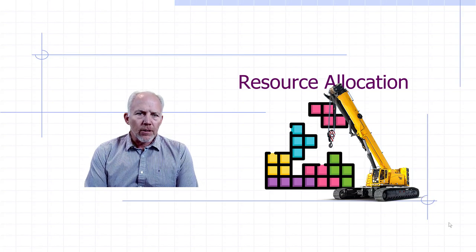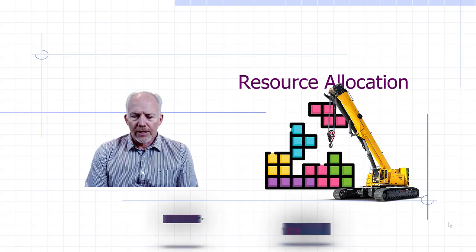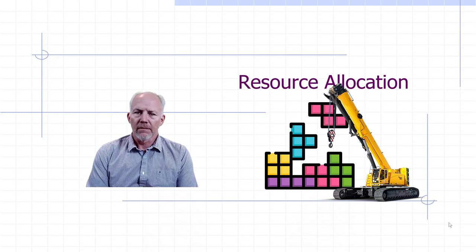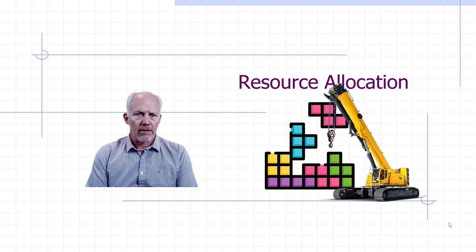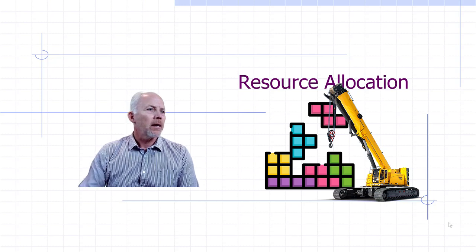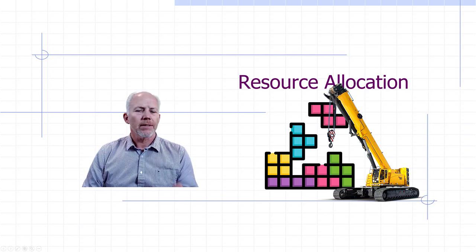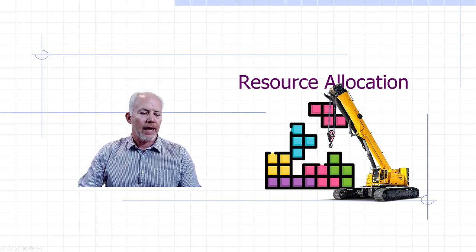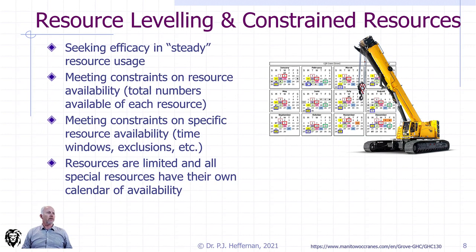We want to carry on talking about resource allocations. In this case, we're going to get into the nuts and bolts of adjusting the schedule to accommodate scarce or over-constrained resources, or otherwise seeking efficiencies. We tend to break it down into two categories: resource leveling and constrained or over-constrained resources.